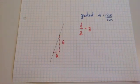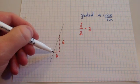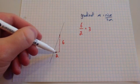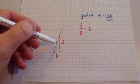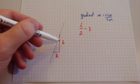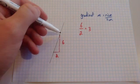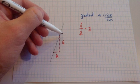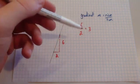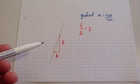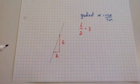What that actually means is: being a gradient of 3 means that for every one square you go across, you go up 3. If you go across another one, it goes up 3 again. So the gradient represents, for every 1 you go across to the right, how many up or down the line would go.